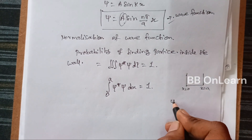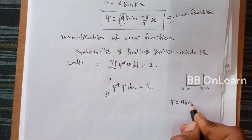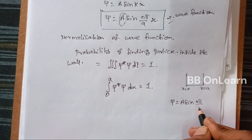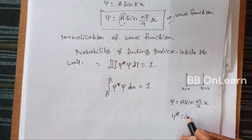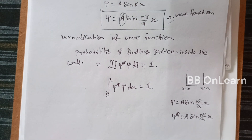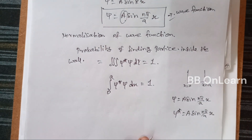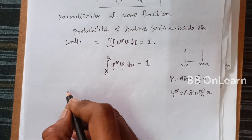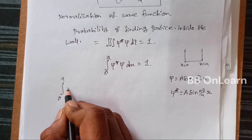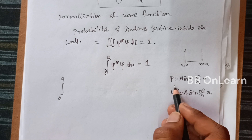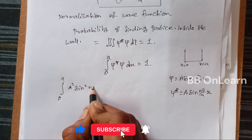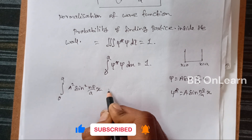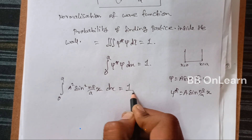So what is psi? Psi is equal to A times sin(nπ/a · x). And psi-star, the conjugate of this wave function, is also A times sin(nπ/a · x). Applying this, the integral from 0 to a of psi-star times psi equals A² times sin²(nπ/a · x).